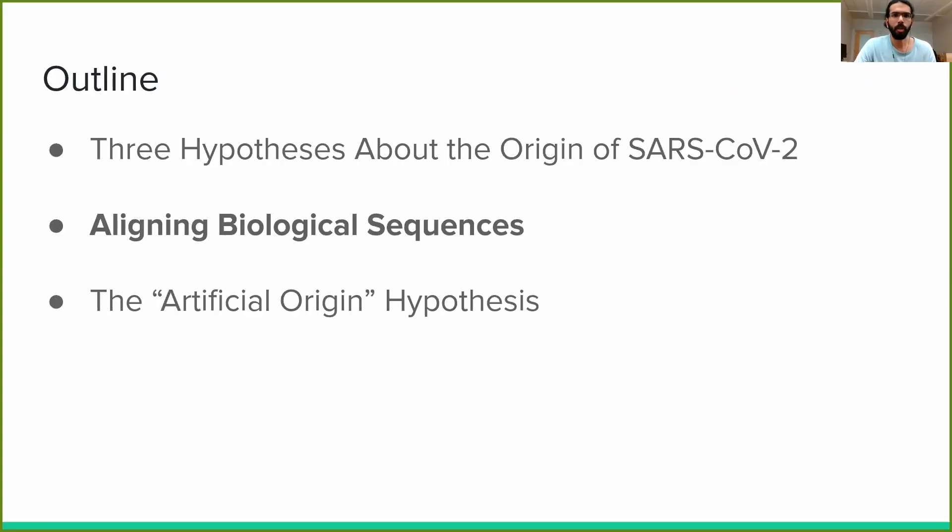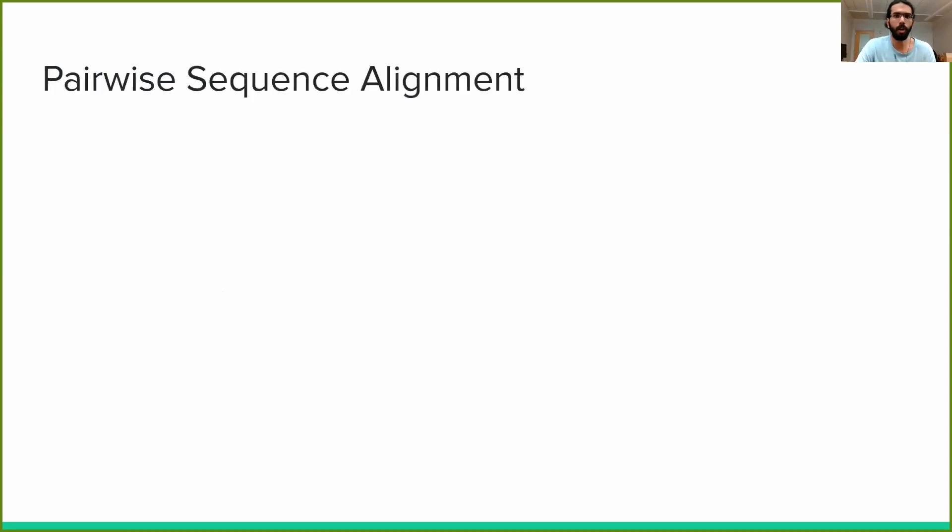Before we explore the three hypotheses about the origins of SARS-CoV-2, we need to understand the fundamentals of aligning biological sequences. Up to this point, our analyses have just used one viral sample's genetic sequence. Recall that we began our investigation in Chapter 2 by downloading a single set of sequencing reads for SARS-CoV-2 with the accession number SRR10971381.